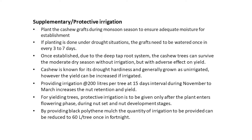For supplementary or protective irrigation, plant the cashew grafts along the monsoon season. The grafts need to be watered once every 3–7 days. Once established, due to the deep tap root system, cashew trees can survive the moderate dry season without irrigation, but with adverse effect on yield. Cashew is known for its drought hardiness and is generally grown as unirrigated; however, the yield can be increased if irrigated.